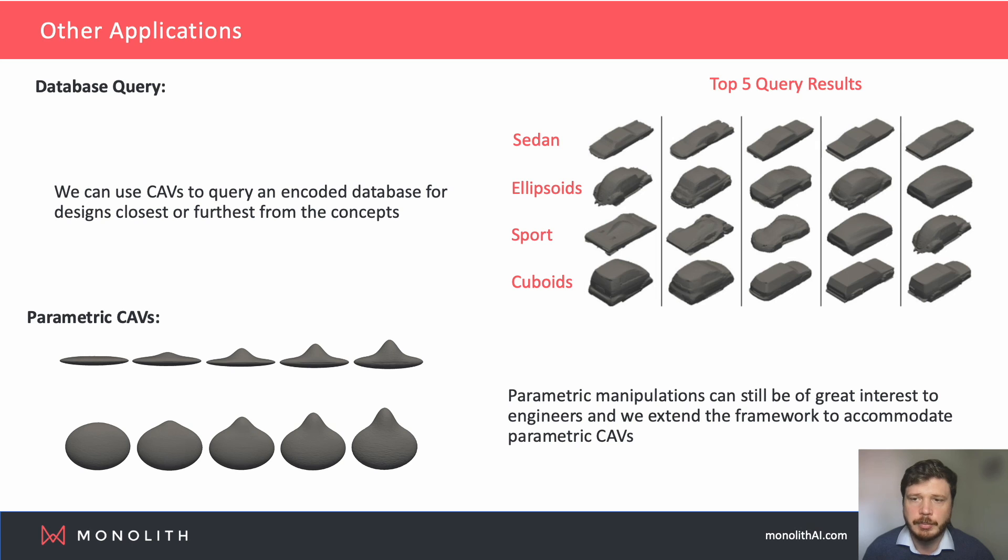Finally, we explore the ability to produce parametric CAVs because it is still important for engineers to be able to recover the numeric design parameters in the latent space. For a particular parameter, we can use examples that have high values and others that have low values to define a high-low parametric concept. We use this idea to control the height of a deformation applied to a dataset of random ellipsoids. In the panel, we can see the original shape in the middle and the result of using the CAV to either side.